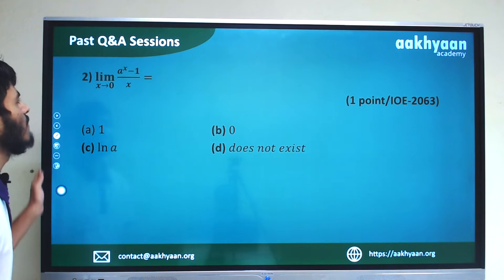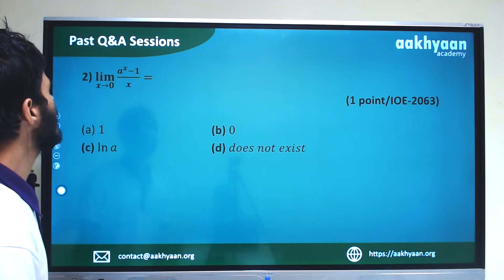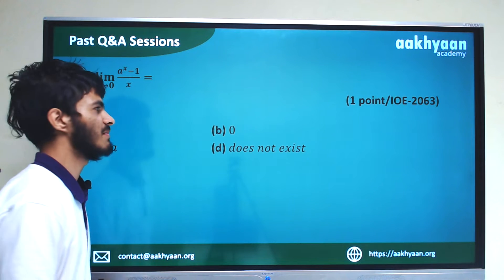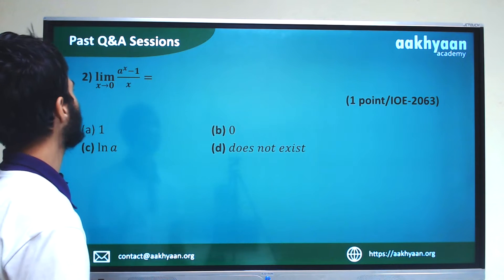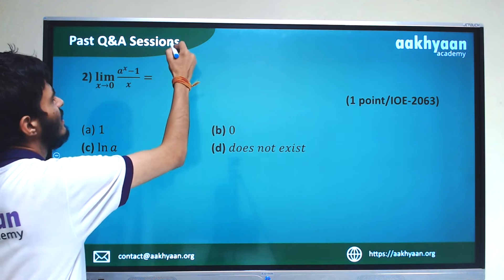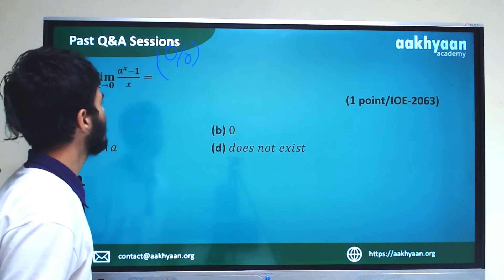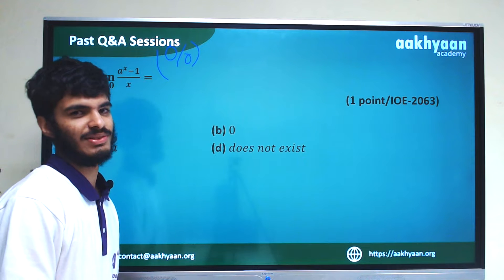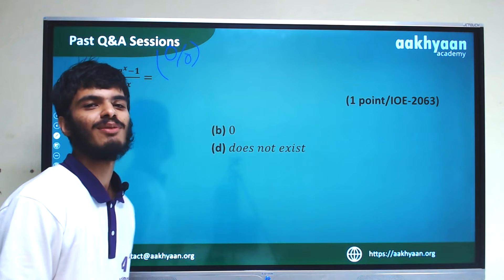In the next problem, we have limit x tends to 0 of (1 to the power x minus 1) by x. Similarly, putting x equal to 0 gives 0 by 0 form, so we can use L'Hôpital's rule, which is the log del rule.